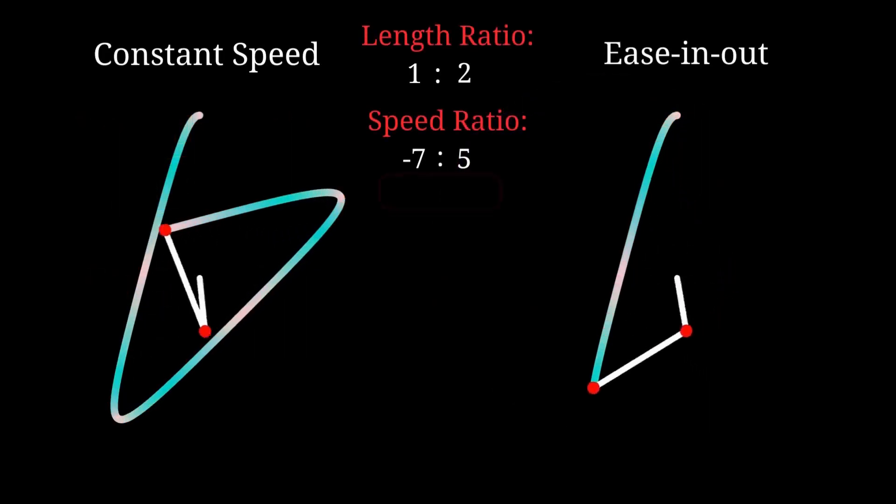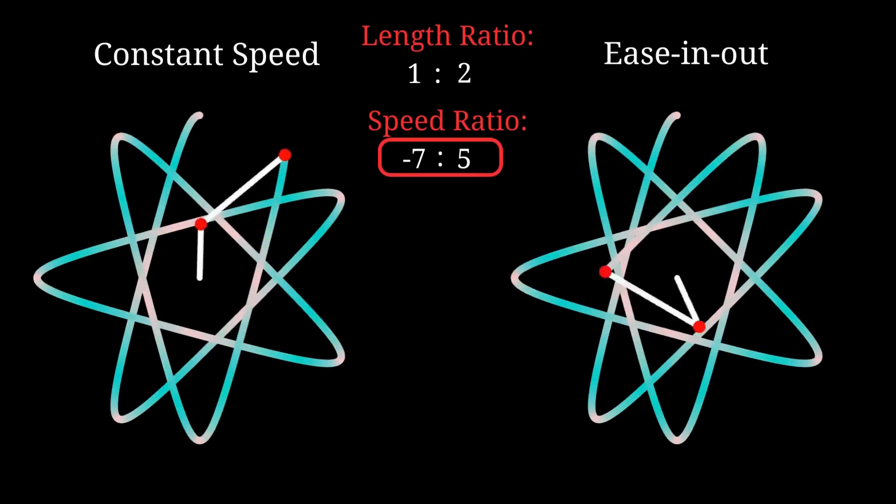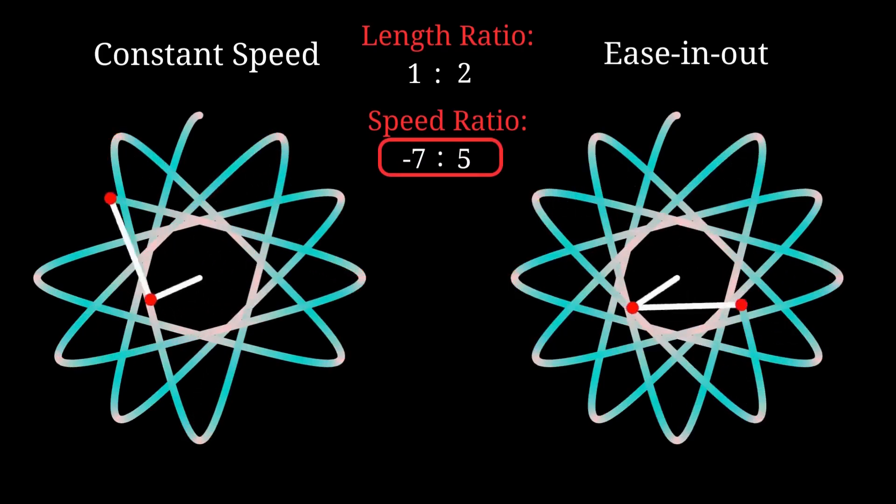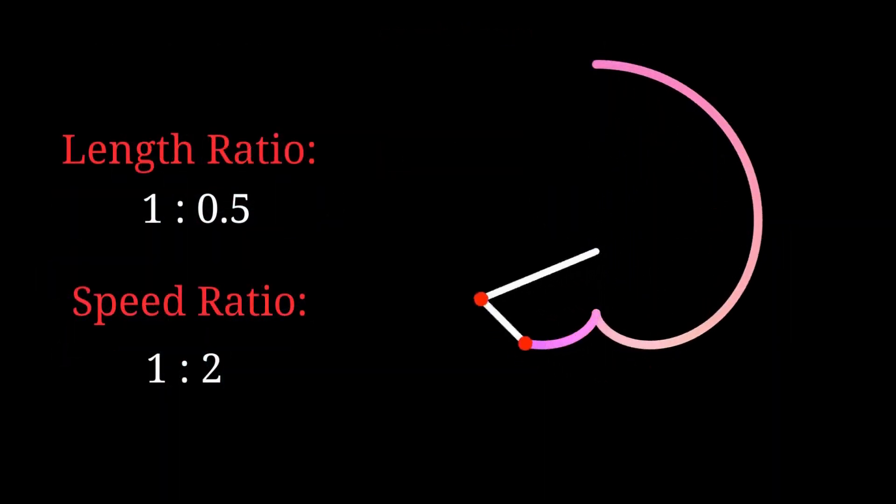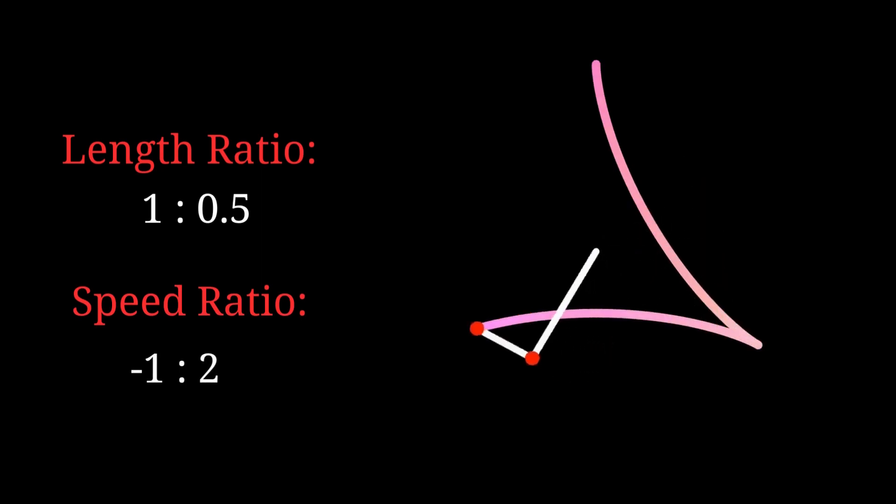When the speed ratio is fixed, the rotation speeds don't even have to be constant. With just two numerical values, we can create unlimited patterns.